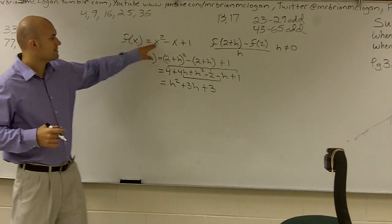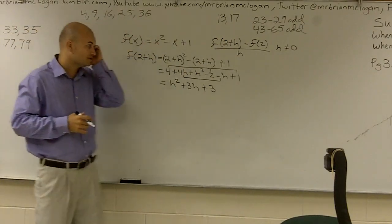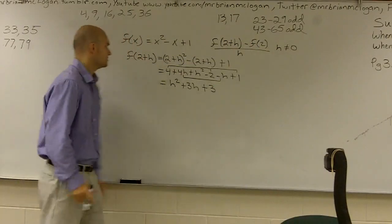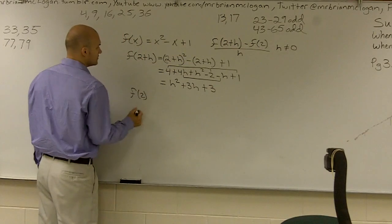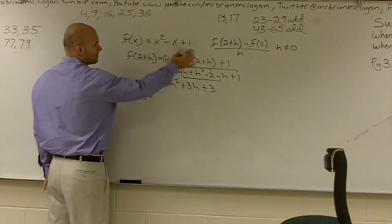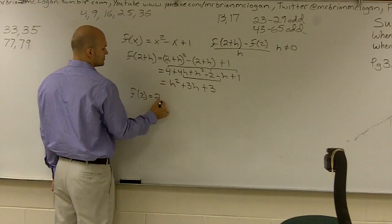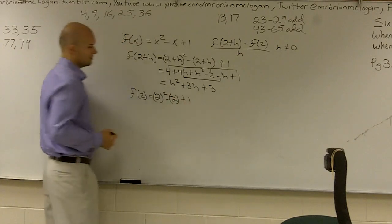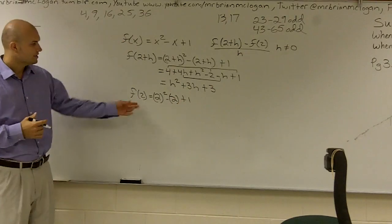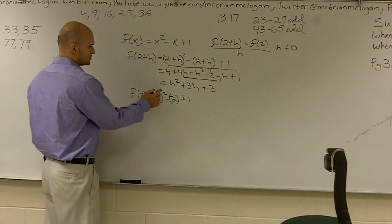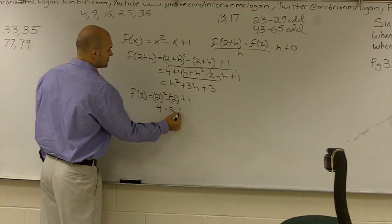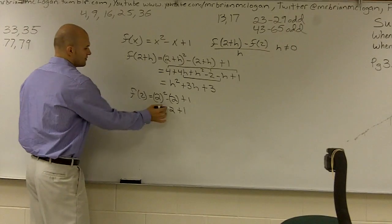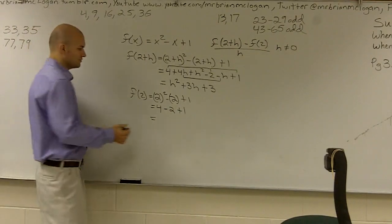So that's my function evaluated for f of 2 plus h. Now I'll evaluate it for f of 2. Remember, you just plug the value in for x. So 2 squared minus 2 plus 1. 2 squared is 4, minus 2, plus 1. So therefore, 4 minus 2 is 2, plus 1 is 3.